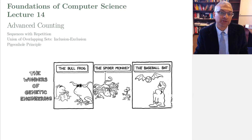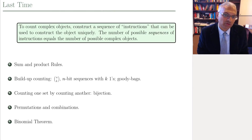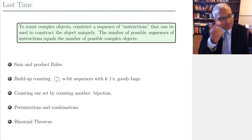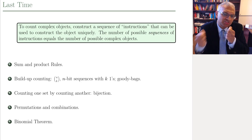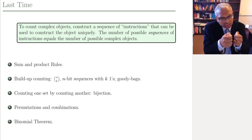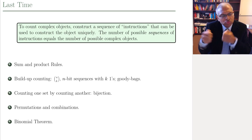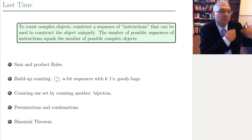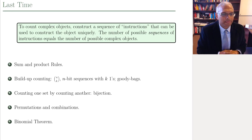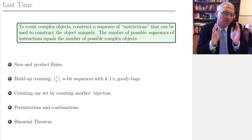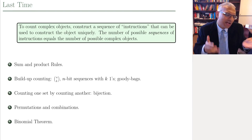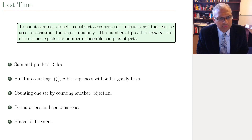Hi there, welcome to lecture 14 on FOX. We're going to talk about advanced counting techniques. Last time we talked about counting complex objects — the basic idea is to think of a complex object as being built up by a sequence of instructions. We talked about the sum and product rule, very powerful rules for counting, and everything we did ultimately boils down to the sum and product rule.